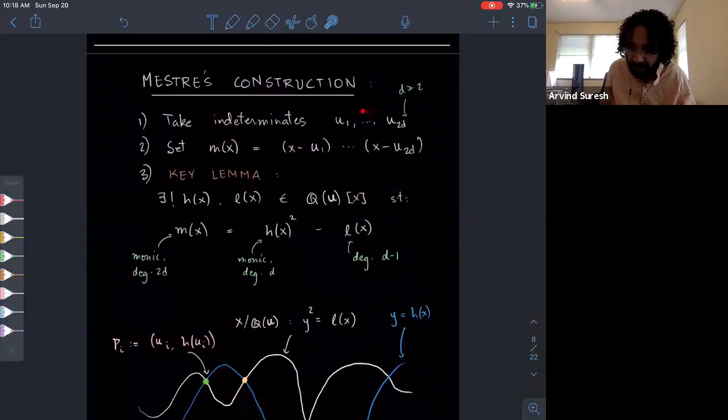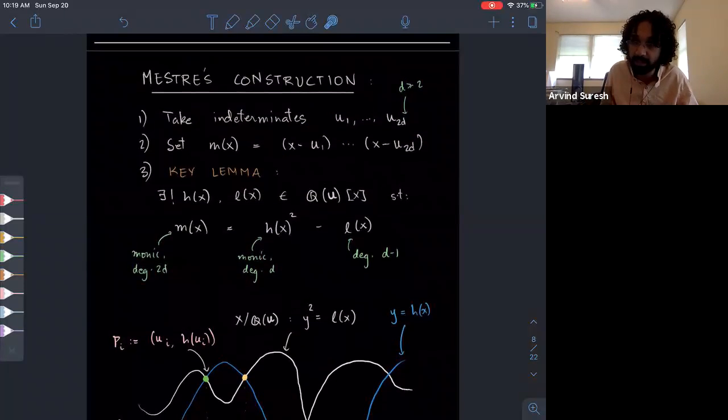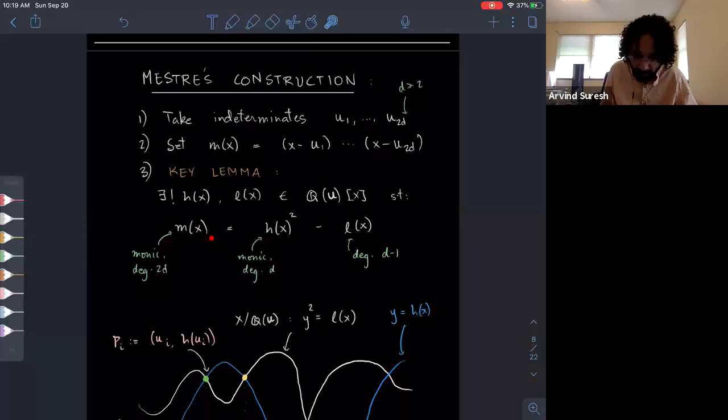How does this work? You start off by taking an even number of indeterminates. We take 2D many indeterminates and we want D to be at least two. We'll see why. You form this polynomial which has its roots these indeterminates. Then we want to apply this fundamental lemma. What does this say? It says that given a monic degree 2D polynomial, you can cook up in a unique way this monic degree D polynomial and a polynomial of degree D minus one satisfying this relation.